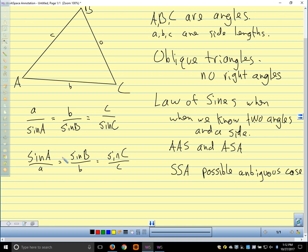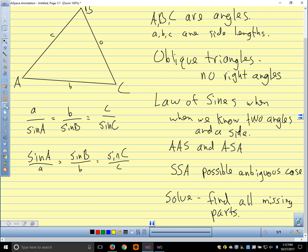So what I want to do is go through a couple of examples using law of sines, and then we'll talk about why it works. And the why it works is going to be important for how we determine whether or not we have an ambiguous case. If the problem asks you to solve, it means to find all missing parts. All right. Questions? Okay. Let's look at a couple of examples.